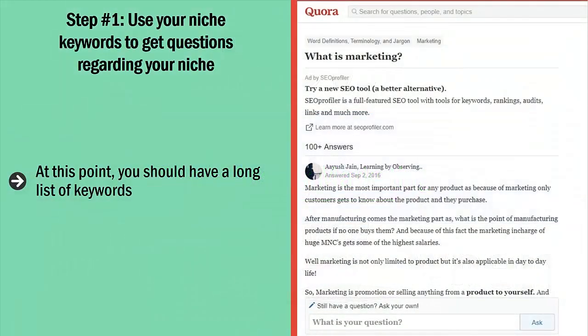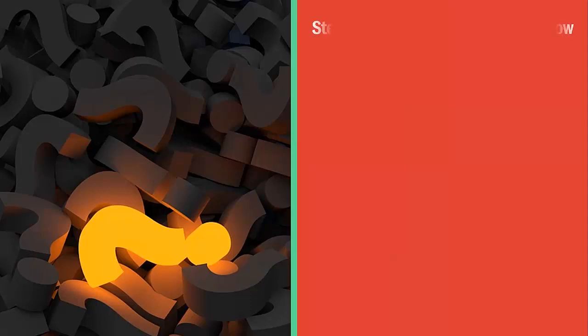Step number one: use your niche keywords to get questions regarding your niche. At this point, you should have a long list of keywords — keywords that are directly related to the products that you have selected. Enter these keywords into Quora's search box. You should be able to retrieve at least some questions related to your niche.